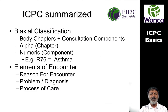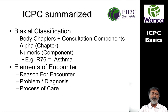Let's summarize ICPC. It's a biaxial classification which has one axis for body chapters and another for the consultation components. Alpha is for the chapter, and numeric is for the component, which allows you a code that tells you — for example — this is asthma, it's unique. This way you can pick up unique codes for reasons for encounter, problem diagnosis, and process of care.